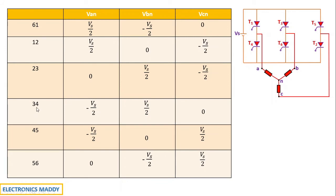For 3-4 conducting: thyristor 3 connects phase B to positive, so Vbn = Vs/2. Thyristor 4 connects phase A to the negative terminal, so Van = -Vs/2. Since no thyristor for phase C is connected, Vcn = 0. Similarly, complete the table for 4-5 and 5-6 cases, and then drawing the waveform becomes straightforward.